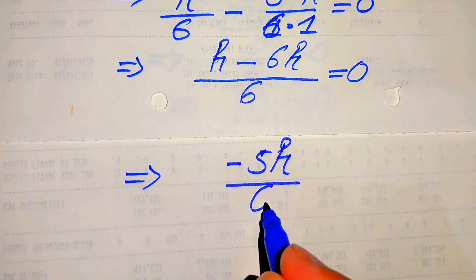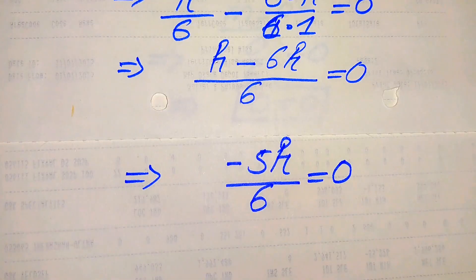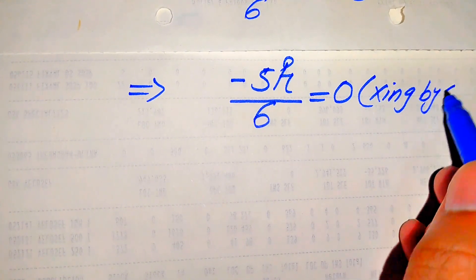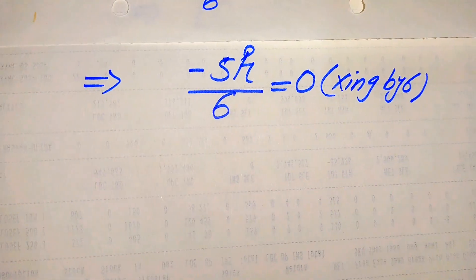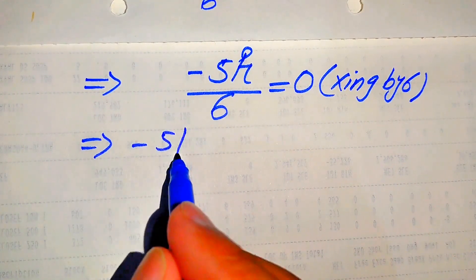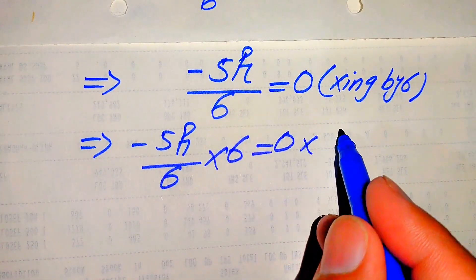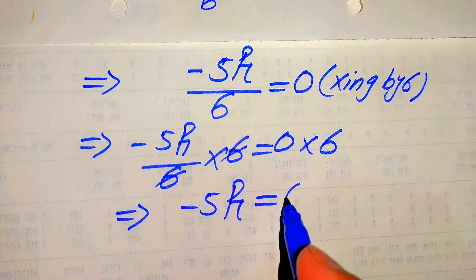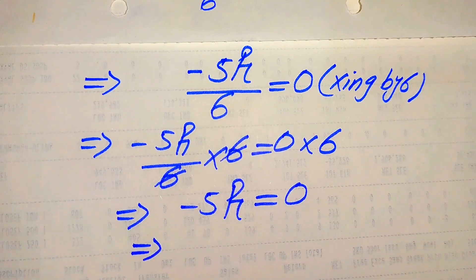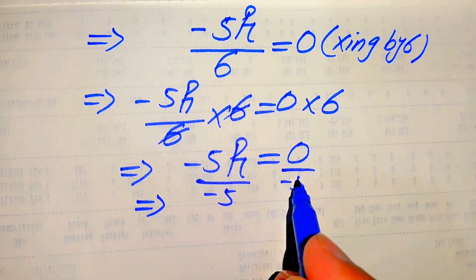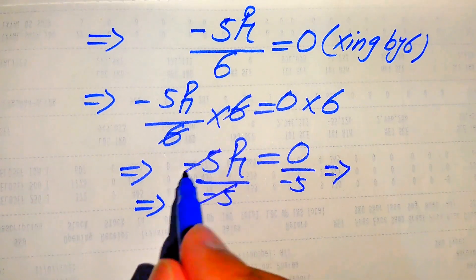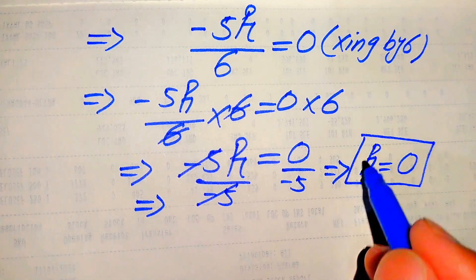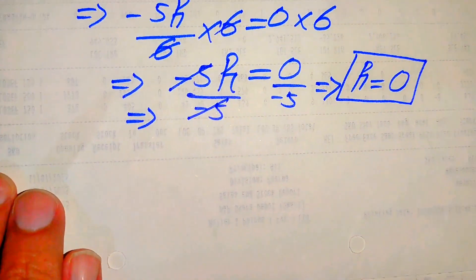Subtracting these two values: h minus 6h equals minus 5h, divided by 6, and this equals 0. To solve for h, we multiply both sides by 6 — the 6 cancels — giving minus 5h equals 0. Then we divide both sides by minus 5; the minus 5 cancels and 0 over minus 5 equals 0. So in the second method we again get h equals 0, meaning both methods give the same answer.